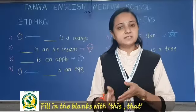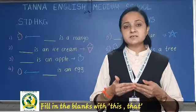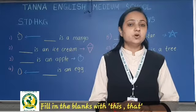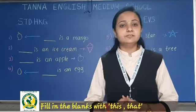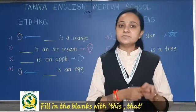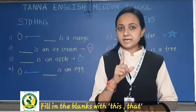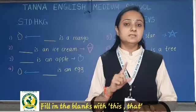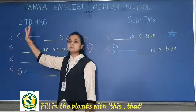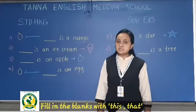So, 'this' and 'that' — where do we use them? Jo cheez hum se nasdik hai, the things which are near to us, we say 'this.' Aur jo cheez hum se door hai, the thing that is far from us, is called 'that.' But in this we use only singular — jab ek hi cheez hoti hai, one object hoti hai, tab hum 'this' and 'that' use karte hain. See this arrow also — long arrow means door hai, and short arrow means jo cheez hum se nasdik hai.